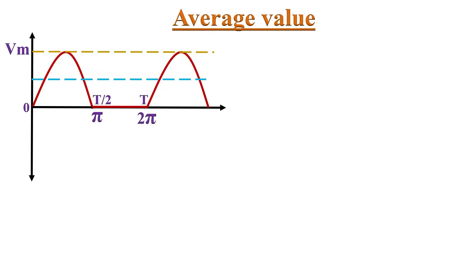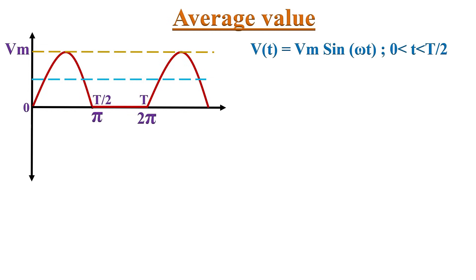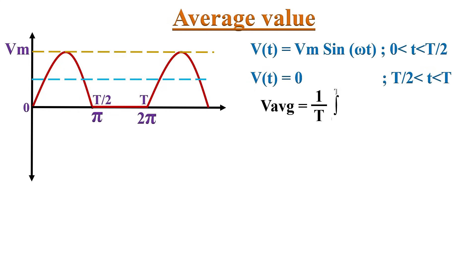Let's start with the average value of the half-wave rectifier. Average value equals the area of a unit cycle divided by the base length of a unit cycle. The negative half-cycles are absent at the output of a half-wave rectifier, so the waveform can be mathematically expressed: during the positive half, from time period 0 to T/2, as Vm·sin(ωt); and for the negative half, from T/2 to T, it equals zero.